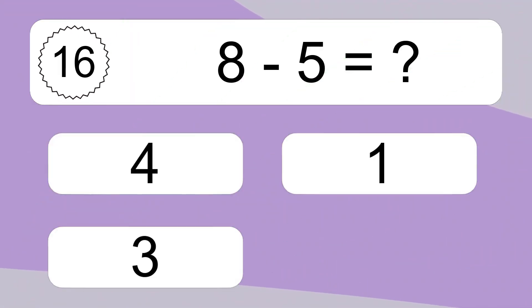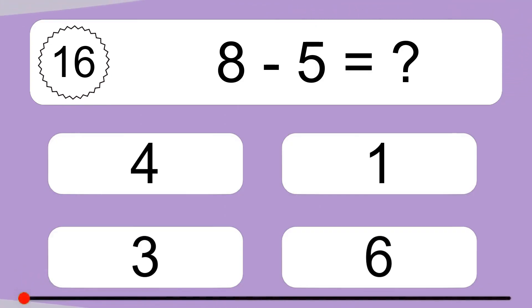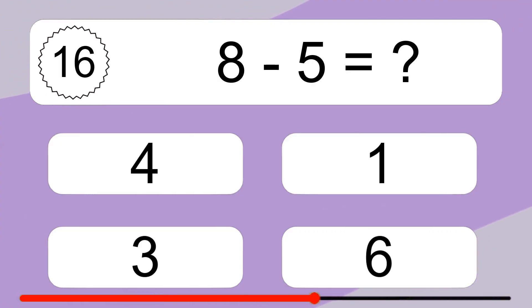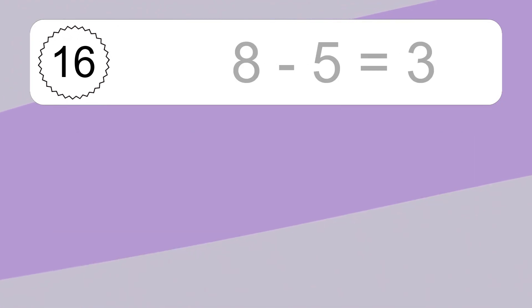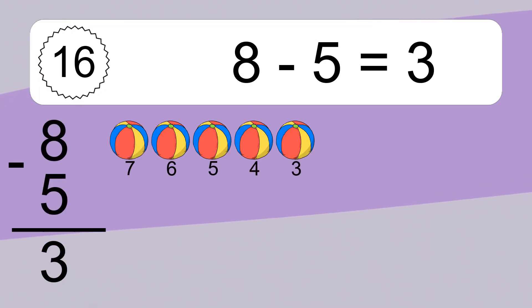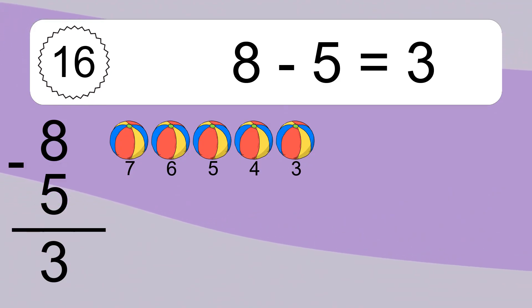8 minus 5 equals what? 8 minus 5 equals 3. Let's count it: 7, 6, 5, 4, 3.